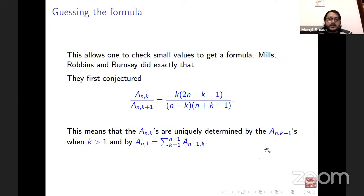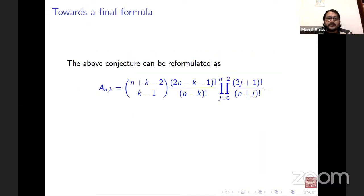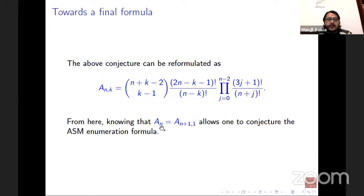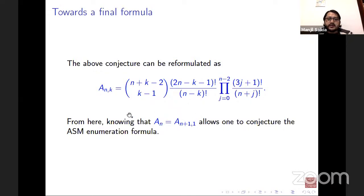This was the crucial observation that the A_{n,k} values are uniquely determined by smaller values. Robbins and Ramsey reformulated the conjecture as a product formula for A_{n,k}, which closely resembles the formula for counting all ASMs of order n. From this, knowing A_{n,1} = A_{n+1,1} allows one to conjecture the full enumeration formula. This conjecture for A_{n,k} was later proven by Doron Zeilberger, a few years after proving the ASM enumeration formula.